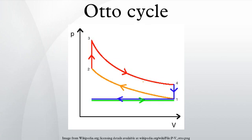The isentropic process of compression or expansion implies that there will be no inefficiency, and there will be no transfer of heat into or out of the system during that process. Hence the cylinder and piston are assumed impermeable to heat during that time. Heat flows into the Otto cycle through the left pressurizing process and some of it flows back out through the right depressurizing process, and the difference between the heat added and heat removed is equal to the net mechanical work generated.